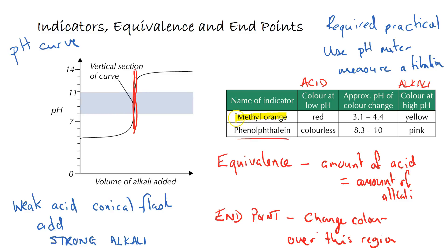You'll need to know the pH changes and colour changes for these two indicators. Methyl orange: in acidic conditions it's red, while in alkaline conditions it's yellow — red below 3.1 and yellow above 4.4, with an orange colour change observed between those two values. Phenolphthalein is more stark: colourless below pH 8.3, pink above pH 10, with the faintest pink colour change between 8.3 and 10.